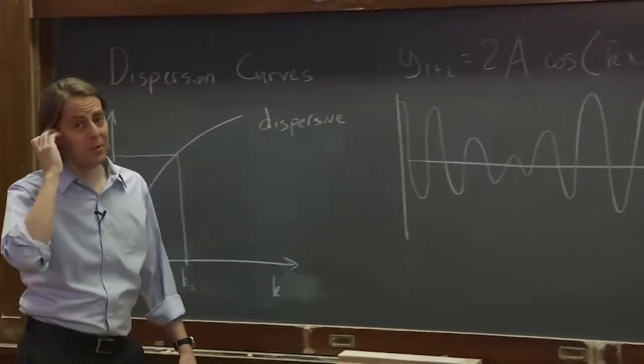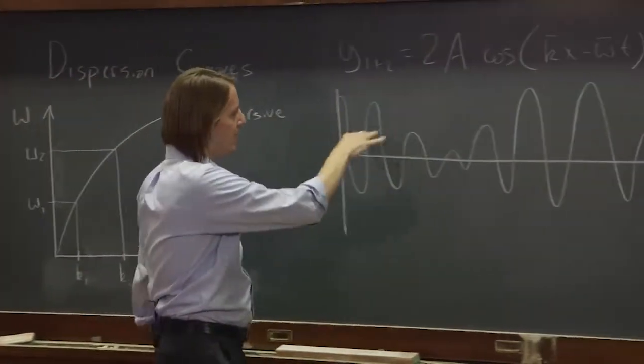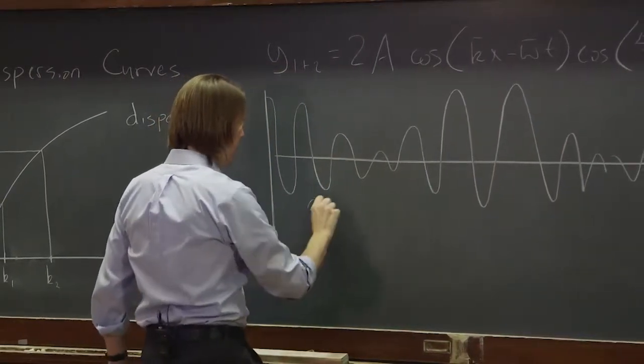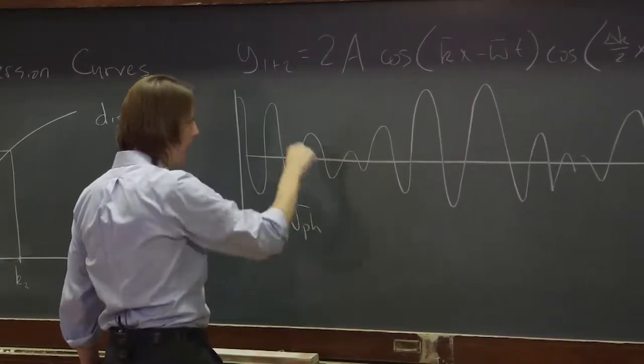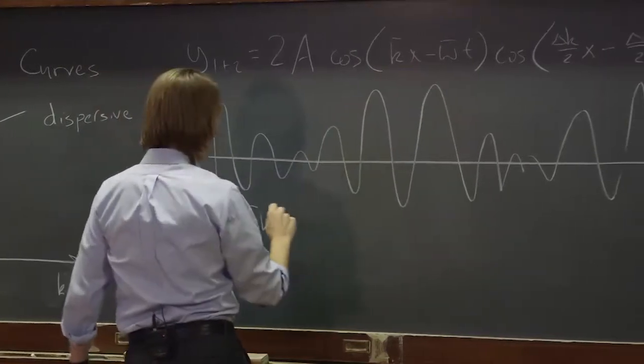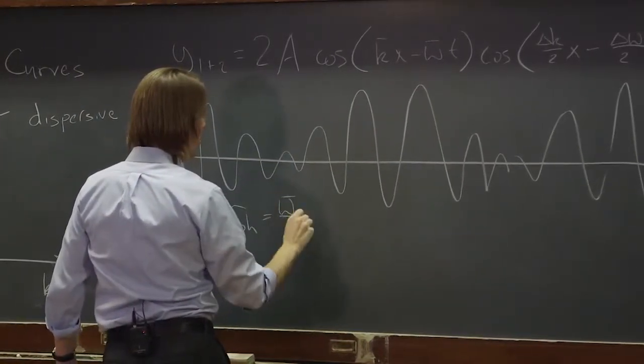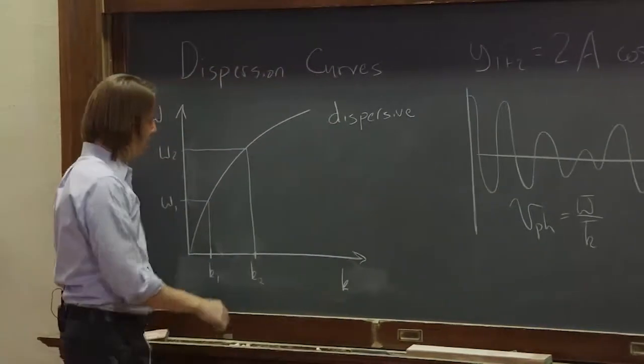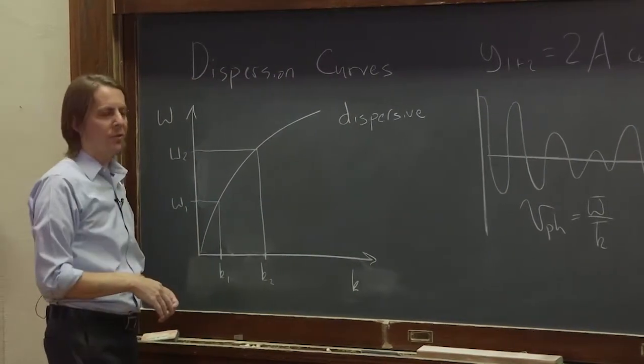So let's think about our velocities in this case. First, there's the high frequency part. So the phase velocity of the high frequency part is omega average over k average, where that velocity is the averaging omega 1 and omega 2.